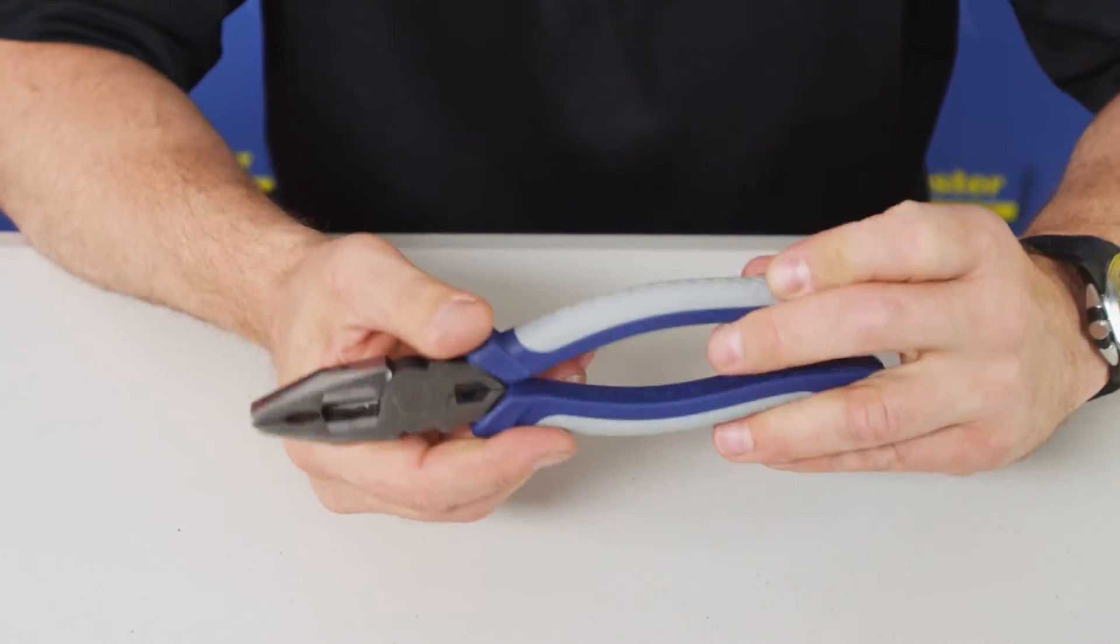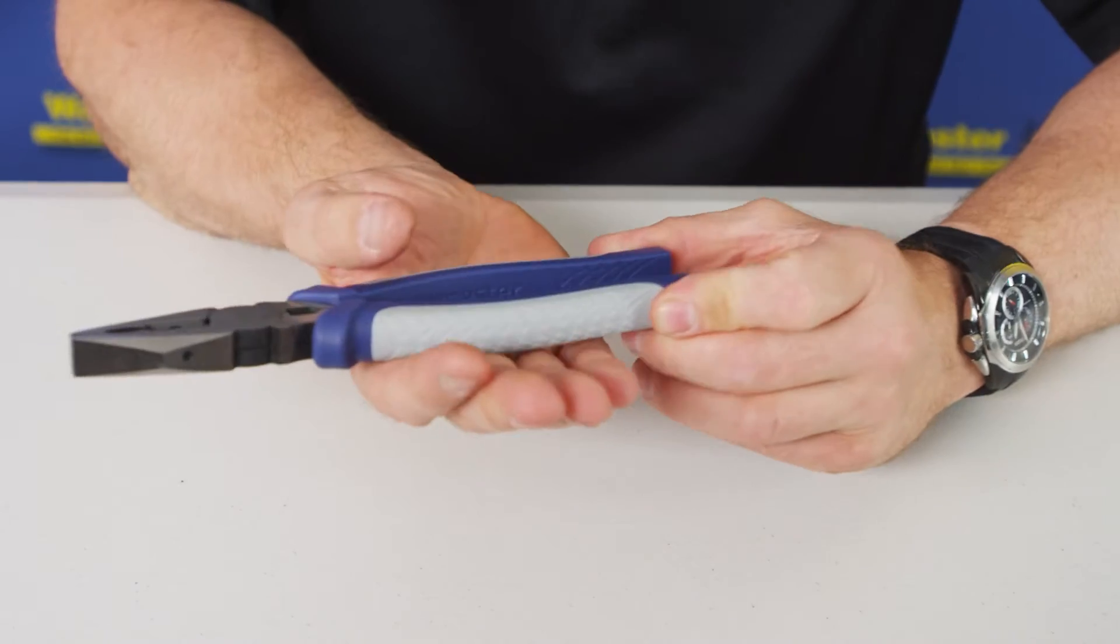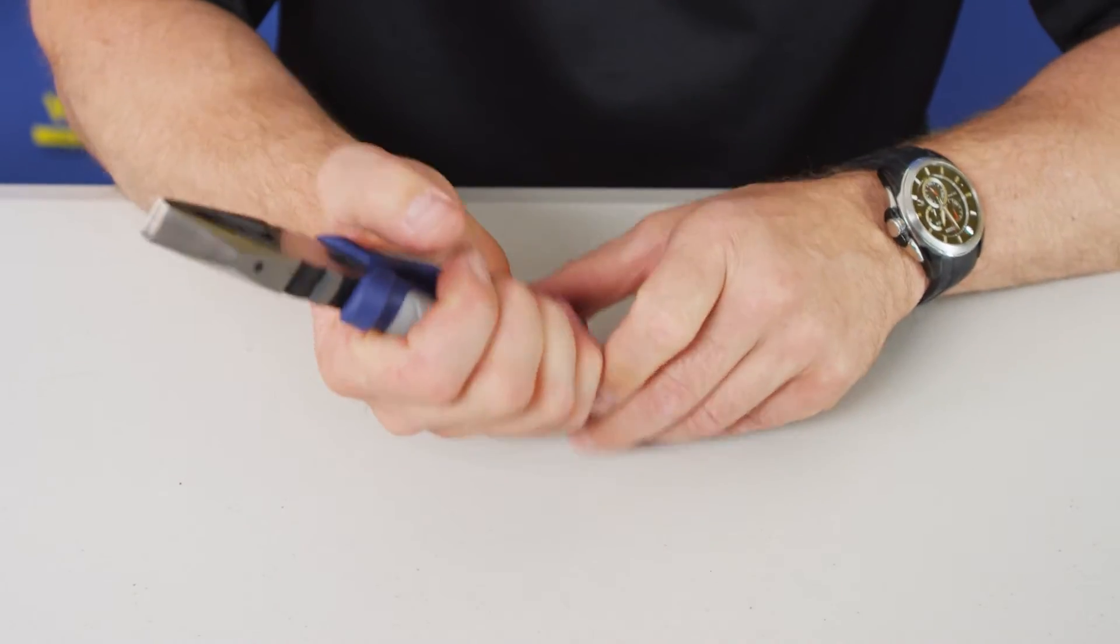The third feature is the new Wattmaster handles. They're insulated to a thousand volts. As you can see, they've got a really good grip feature and they sit well in your hands. They don't slip.